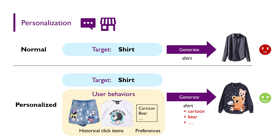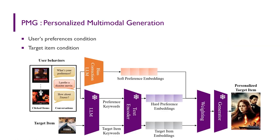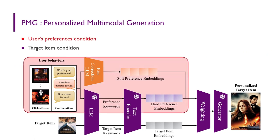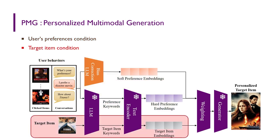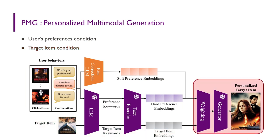Besides, personalization generation can also be used in video games, intelligent assistants, and so on. To address the aforementioned applications, we propose Personalized Multimodal Generation using LLMs, PMG for short. PMG utilizes an LLM to extract the user's preferences from the user's behavior history, such as clicks in recommender systems or past conversations. The information of the target item — which means the item we aim to generate — is also extracted by the LLM. Then the user preferences condition and target item condition are fed into a generator to produce personalized content.